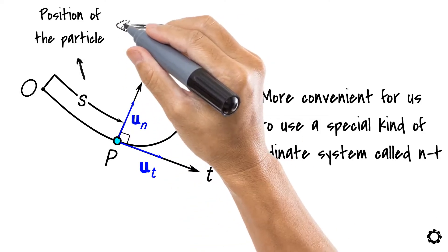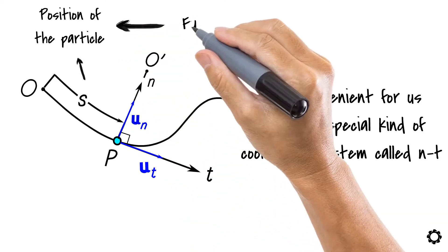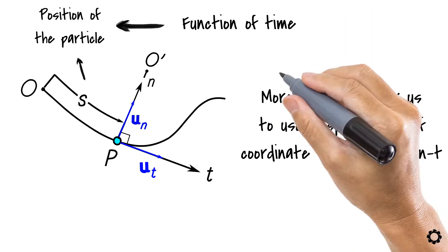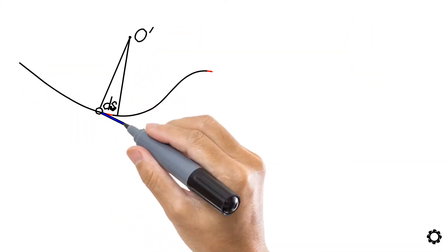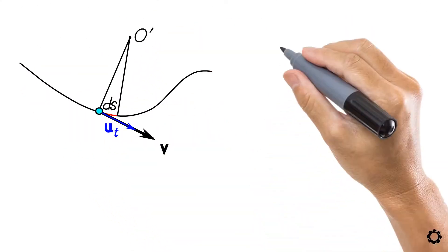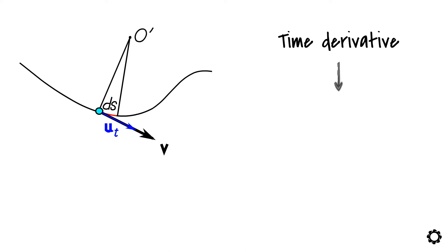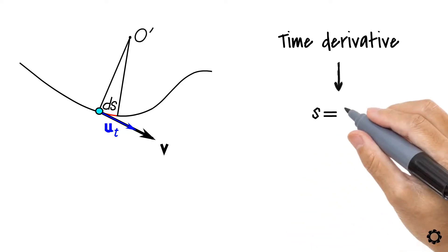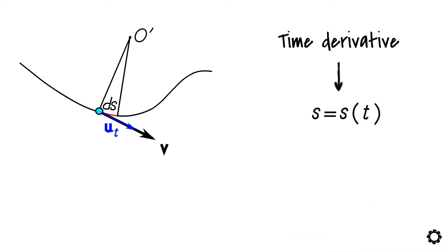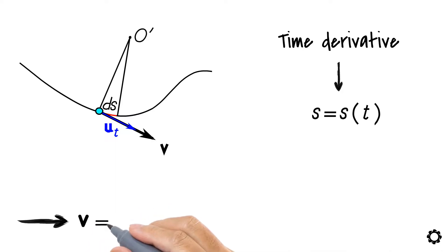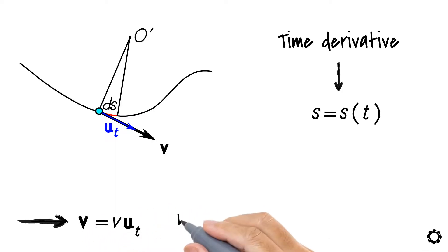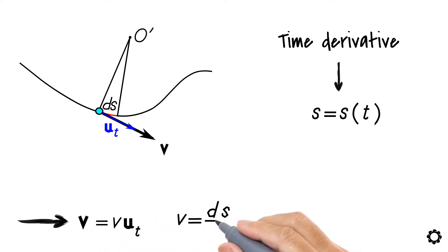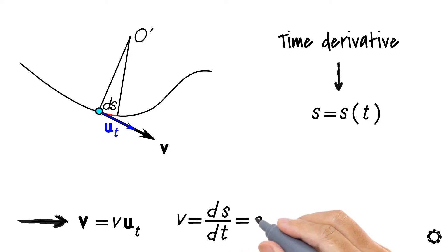Because the position of the particle s is a function of time, we could solve the velocity of the particle on this curved path by taking the time derivative of the path function s equals s of t, which leads to the following equation: v equals v times ut, where v equals ds by dt equals s-dot.